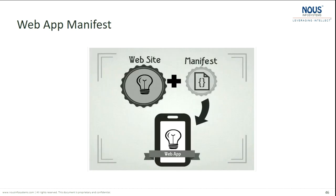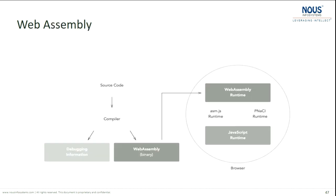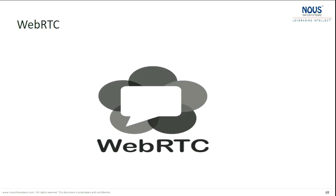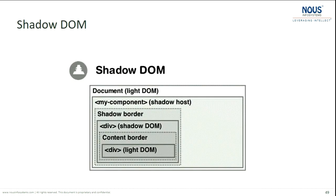Web App Manifest — this is borrowed from compiled languages like C# where assemblies contain all information about an application. UI has taken that concept, which helps when your application loads on multiple different platforms like mobile, desktop, or television. Web Assemblies allow you to directly run machine code in your browser. Web RTC provides real-time communication. Shadow DOM is one of the latest technologies on your browser. We've taken all these and incorporated them into our startup kits.